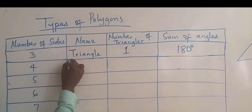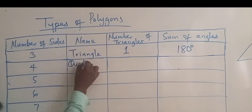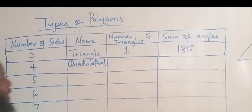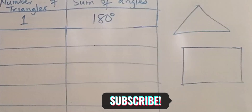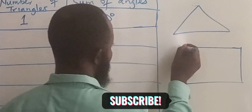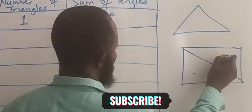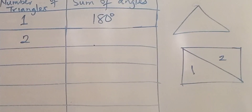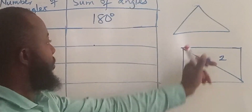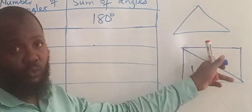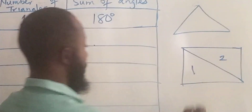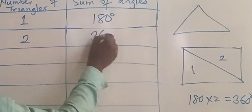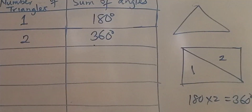The polygon with four sides is called a quadrilateral. How many triangles can we see in a quadrilateral? Let's look at this rectangle — we can divide it into two: this is one triangle and this is another triangle, so it has two triangles. Since one triangle is 180 degrees, two triangles will be 180 multiplied by 2, which is 360 degrees. Therefore the sum of angles in a quadrilateral is 360 degrees.